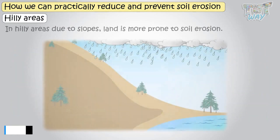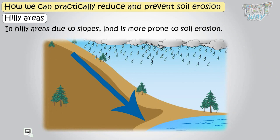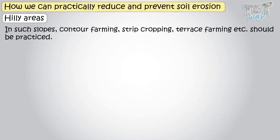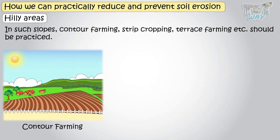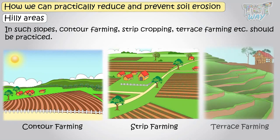In hilly areas, due to slope, land is more prone to soil erosion. And in such slopes, contour farming, strip cropping, and terrace farming should be practiced.